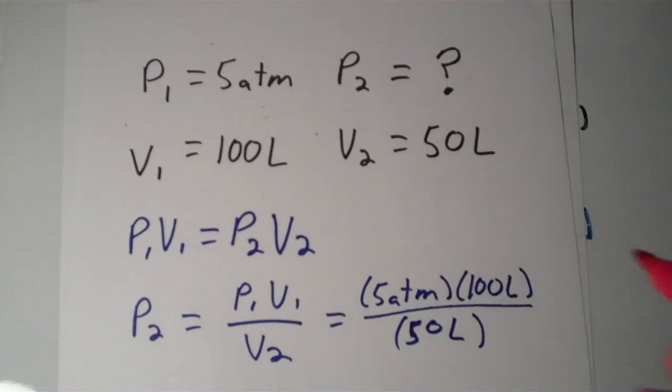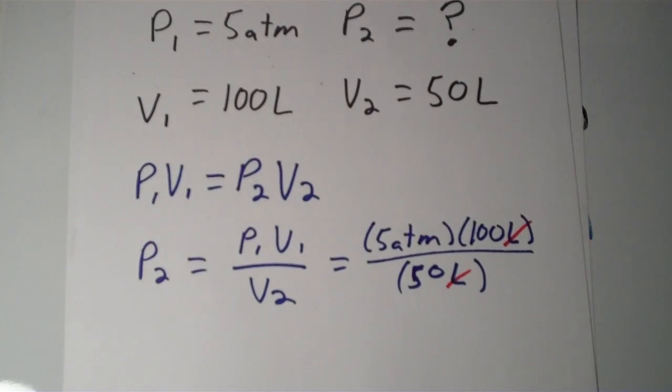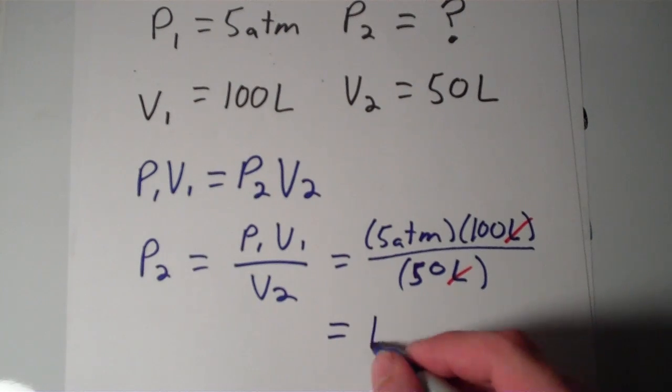And the liters cancel here, and we're left with nothing but atmospheres, the unit of pressure, which is good. So 5 times 100 divided by 50, that looks to me like that's going to be 10 atmospheres.